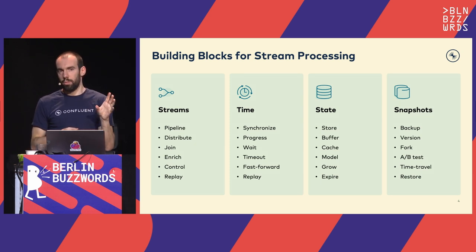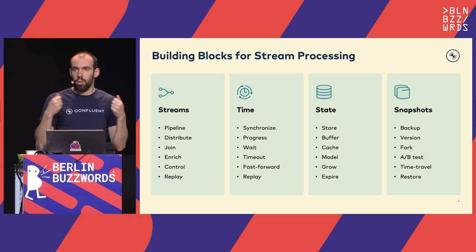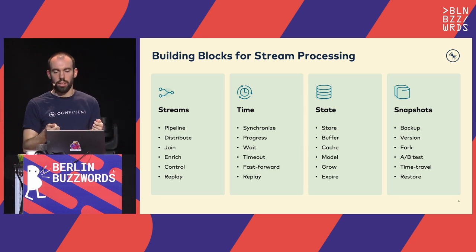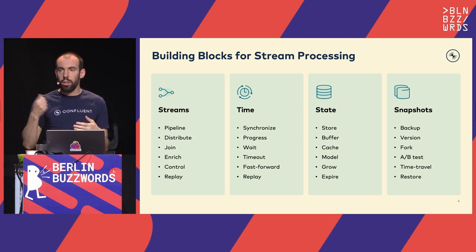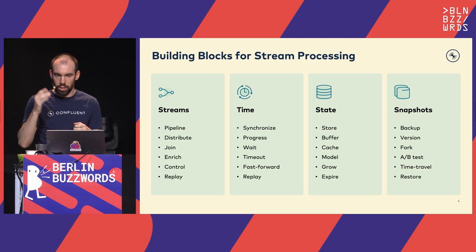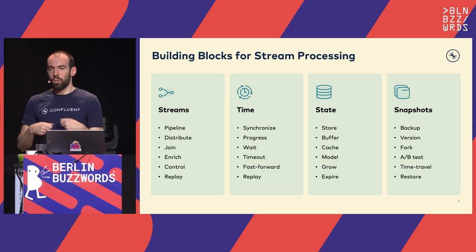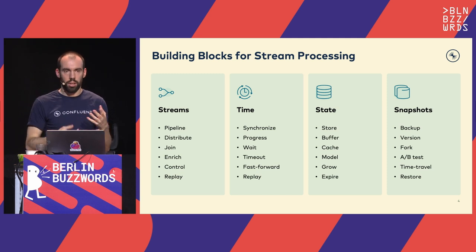The next two building blocks are very special for Flink: State and Snapshots. State can be just an integer, a string, or even a machine learning model — Flink is very flexible, letting you store arbitrary Java or Python objects in State. State allows you to buffer things so you don't have to communicate with the database again, wait for more events, or cache data. State can grow large, and you can also expire State for GDPR compliance or other reasons.